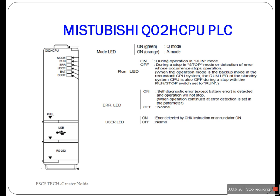This figure shows the front face of the Q02H CPU PLC. The Mitsubishi Q02H CPU series PLCs can be used to perform a range of operations, from basic operations such as driving inputs and outputs to driving a servo motor in conjunction with a motion control module. The LEDs on the unit show the status and operations carried out by the PLC: the mode LED shows the mode of the CPU, the RUN LED shows the status of the CPU operation, the battery LED shows the status of the CPU battery, and the boot LED shows the start or stop of the PLC booting process.